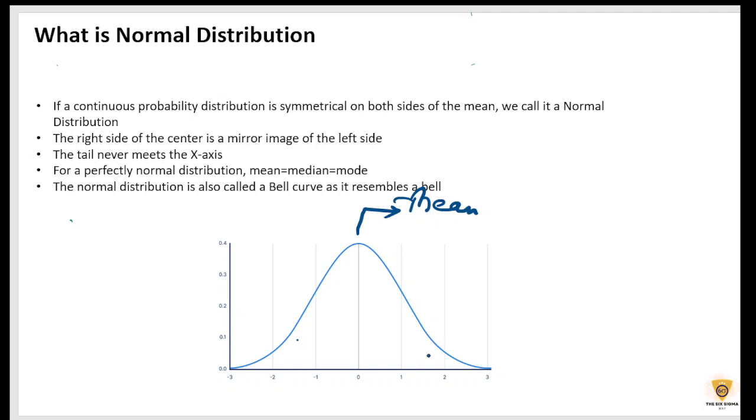And this tail is never going to meet the x-axis. And for a perfectly normal distribution, mean is equal to mode is equal to median.